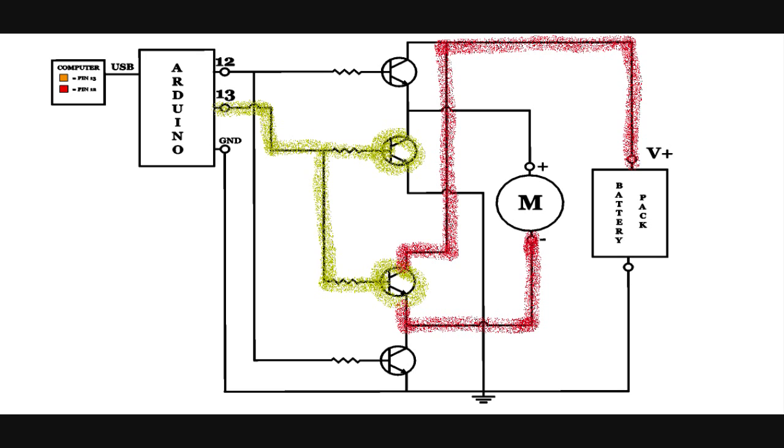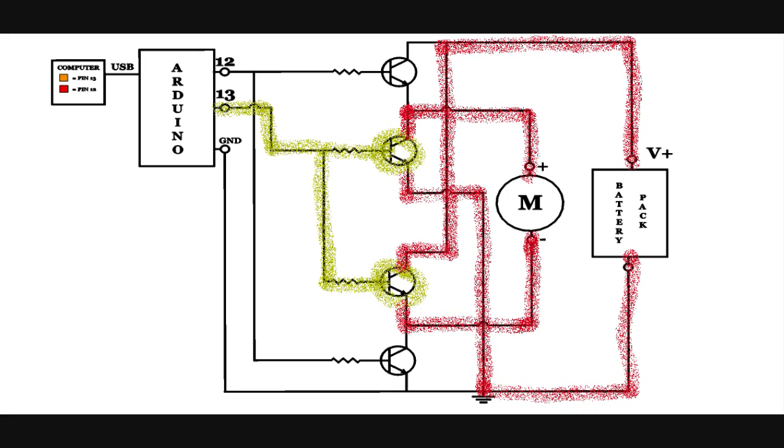but this time from the opposite end. Then we go through the motor to the second on transistor, down to ground, completing the circuit. Notice this time the current is running in the opposite direction through the motor. That causes the motor to run in the opposite direction too.